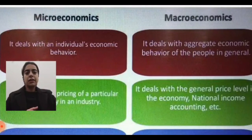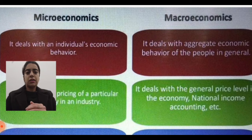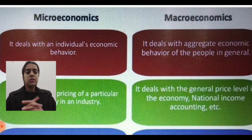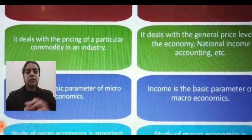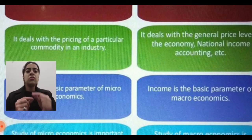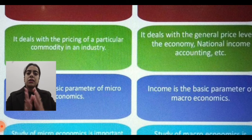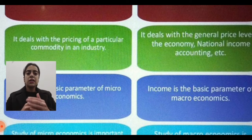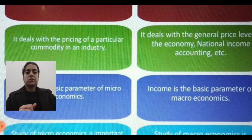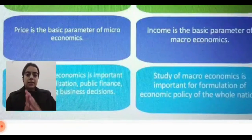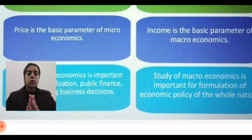Microeconomics deals with individual economic behavior, while macroeconomics deals with the aggregate economic behavior of people in general. Microeconomics deals with the pricing of a particular commodity, while macroeconomics deals with the general price level of the economy — including national income, accounting systems, monetary policy, and fiscal policy. In microeconomics, price is the basic parameter, while in macroeconomics, income is the basic parameter.